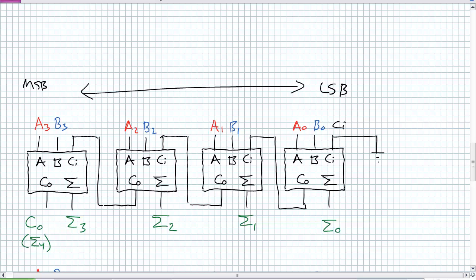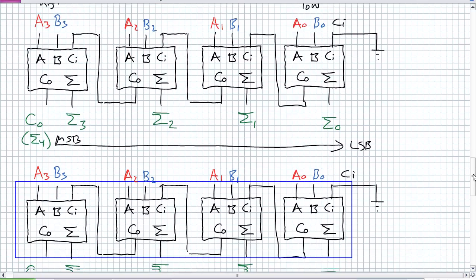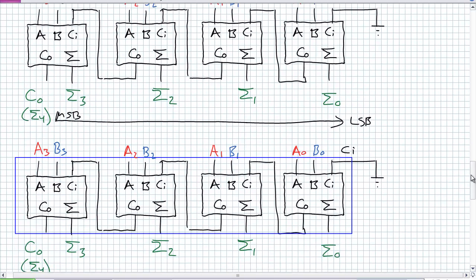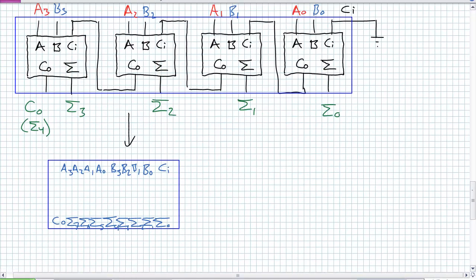It's a 4-bit parallel adder where B0 and A0 are being added in the low order all the way up to A3, B3 in the high order. The outputs go from MSB to LSB, tying that low-order carry in to zero because it's the lowest order. I'm taking four previously defined components — four full adders — and using them to make a 4-bit adder.